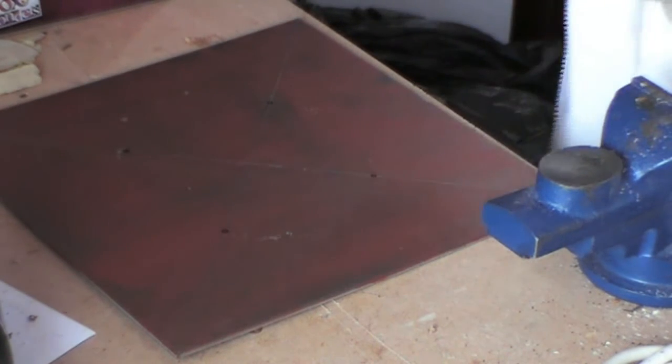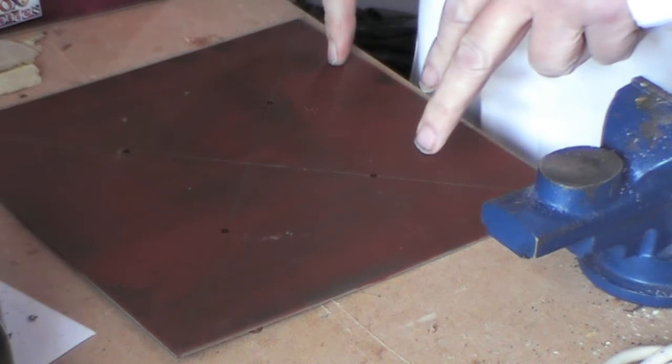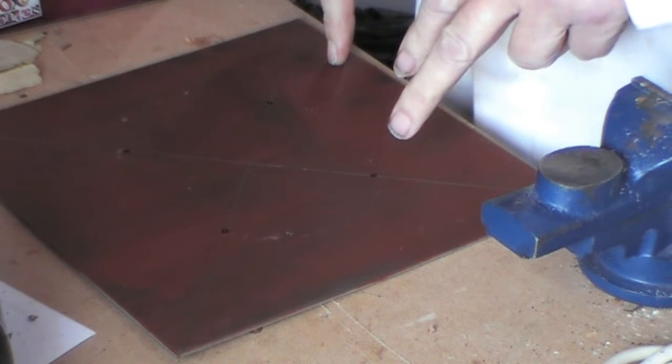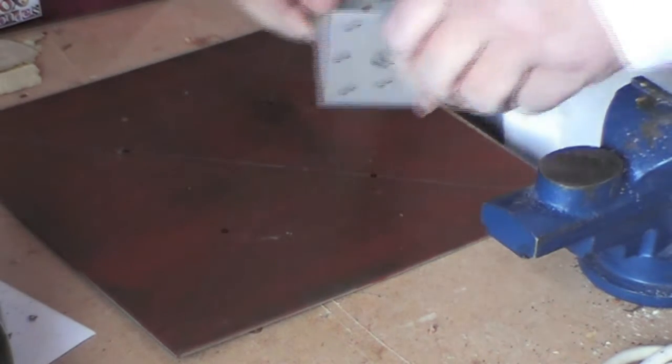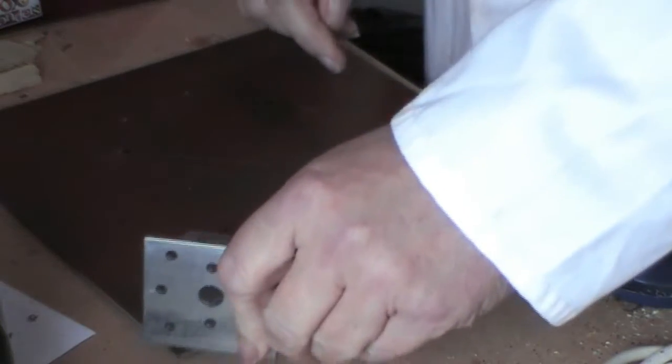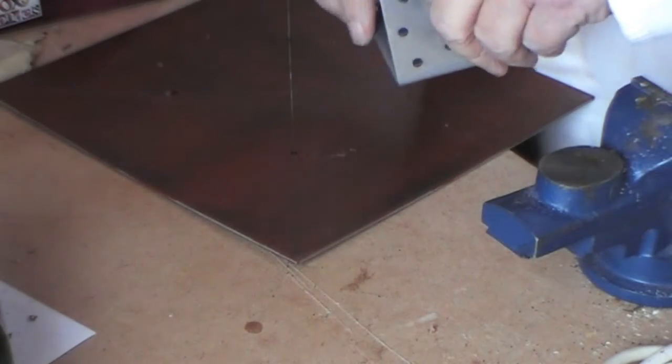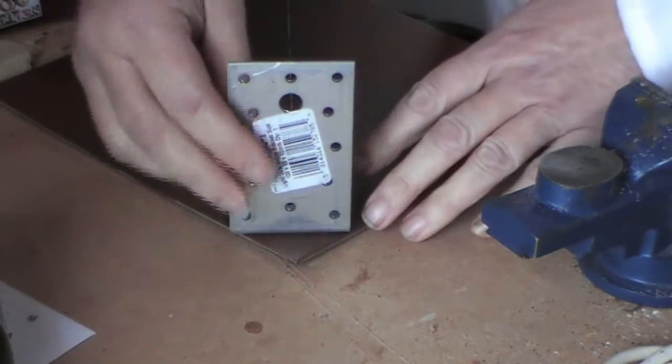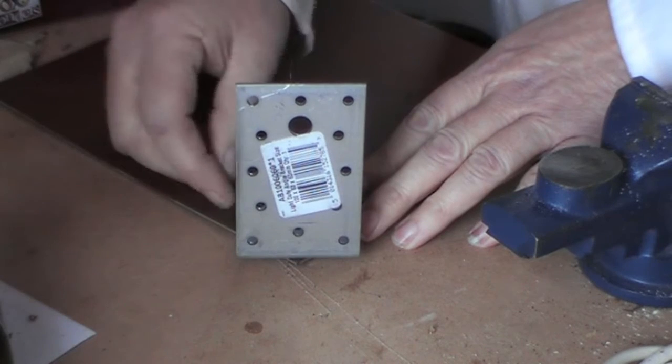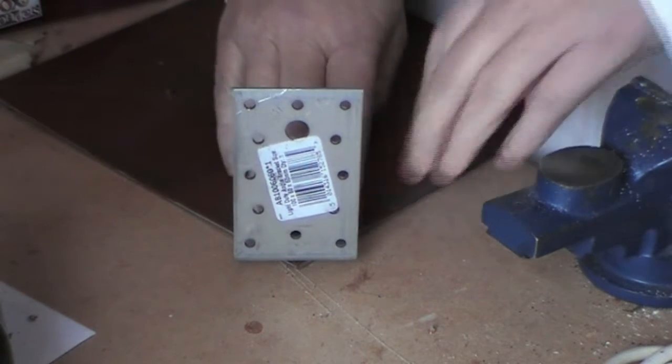The next bit is to get one of these R-shaped brackets. This R-shaped bracket will be going on there, bolted into position, and then this part will actually hold the vane.